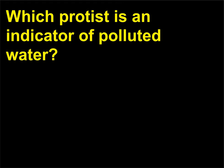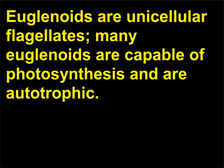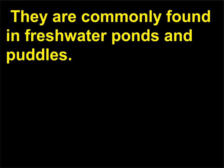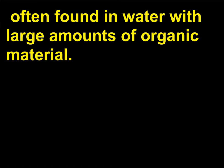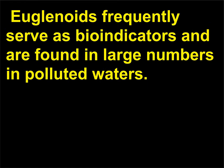Which protist is an indicator of polluted water? Euglenoids are commonly found in freshwater ponds and puddles. Others do not carry on photosynthesis and are heterotrophic, often found in water with large amounts of organic material. Euglenoids frequently serve as bioindicators and are found in large numbers in polluted waters.